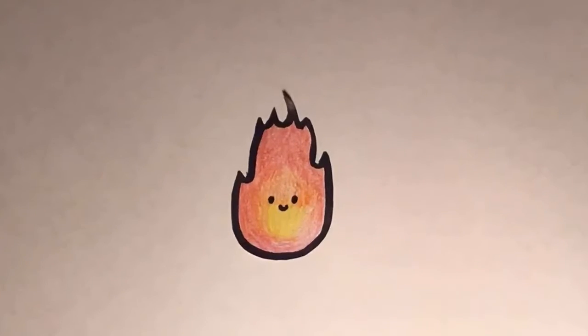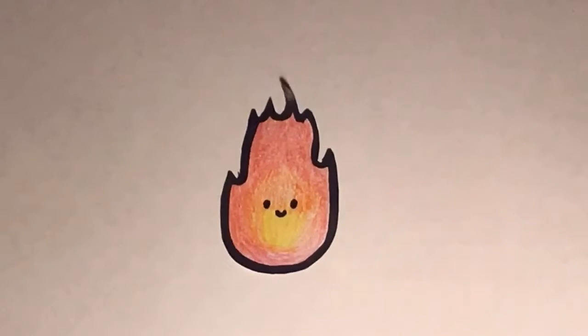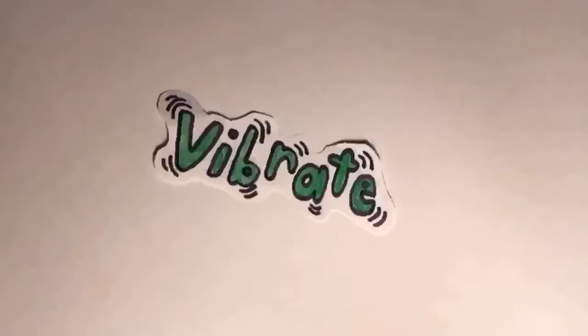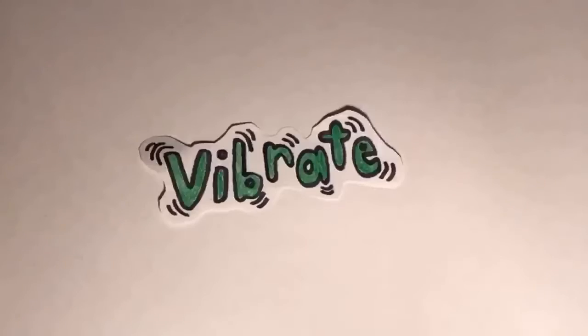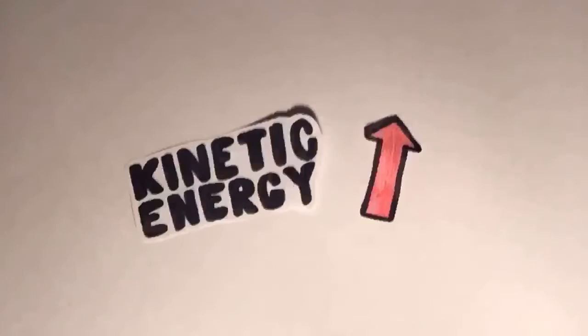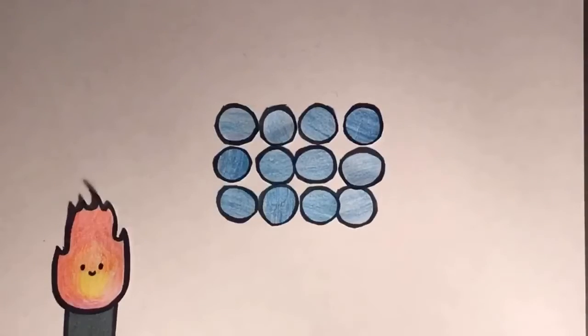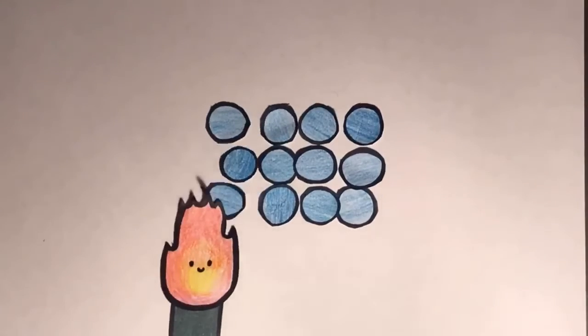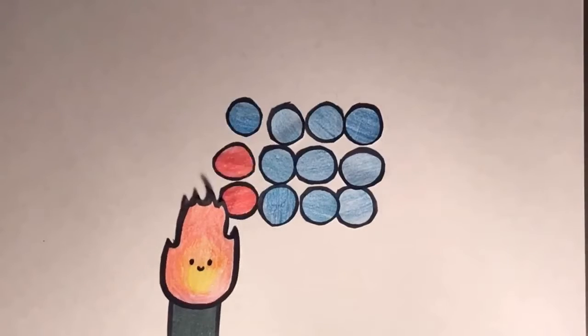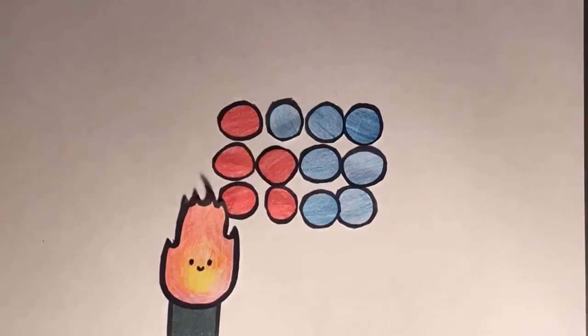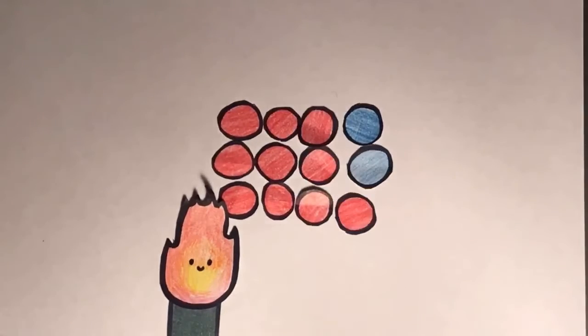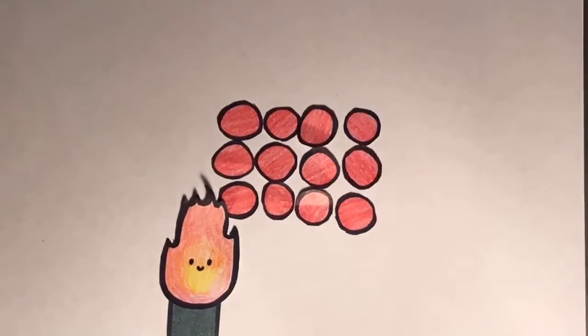When you expose the particles in a solid to heat, they start to vibrate more and more, increasing the kinetic energy of the particles. Because of the compact spacing of the particles in a solid, the faster vibrations cause the particles to collide. When one particle collides with another, the kinetic energy is transferred and causes a domino effect of heat along the metal.